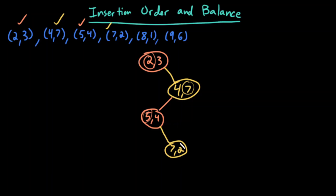Next, (8,1). I start at the root. 8 is greater than 2, go right. 1 is less than 7, go left. 8 is greater than 5, go right. 1 is less than 2, go left.